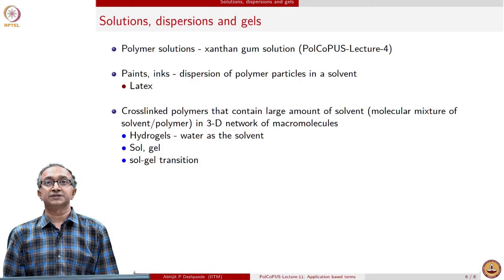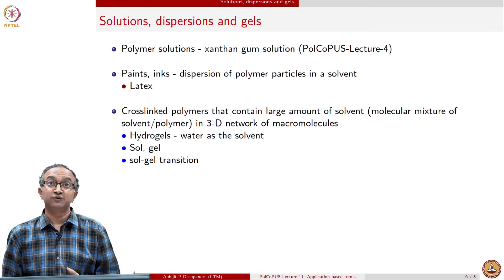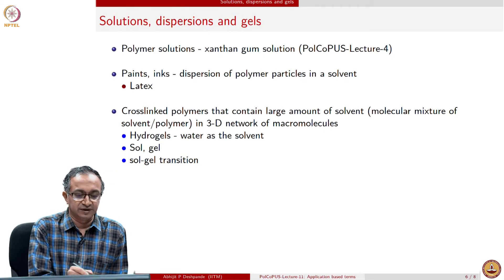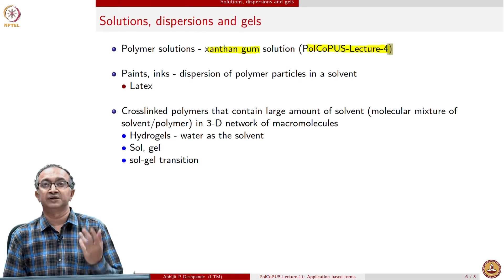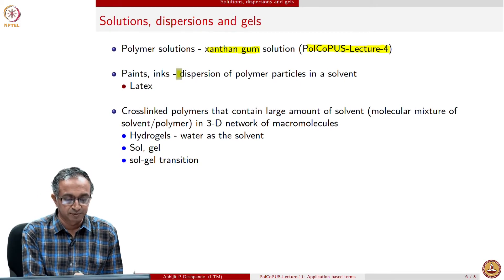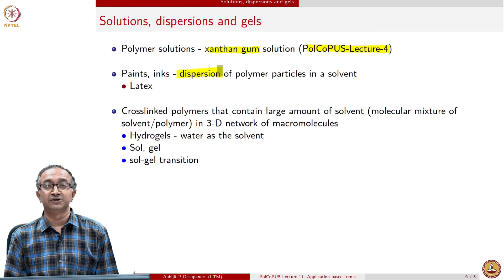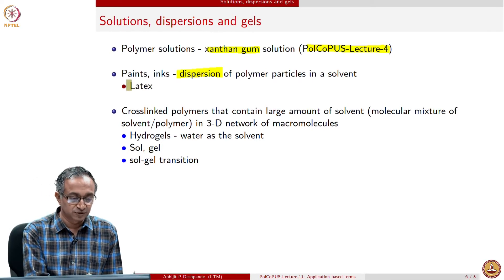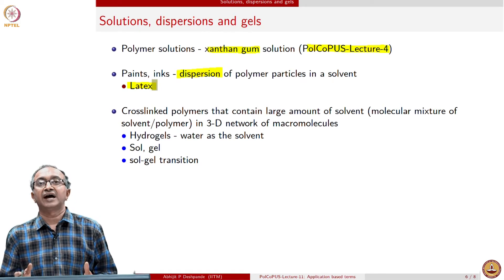Let us now look at solutions and flowing applications of polymers. When we say thermoplastics, thermosets, and rubbers, we imply solid polymer use, but polymers are also used in liquid-like forms. An example of a polymer solution is xanthan gum solution, used in petroleum recovery and food applications. An important application is polymers in dispersion form, where polymers are retained as particles in a solvent or dispersing medium. This is also referred to as latex, since the latex from a rubber tree is a dispersion of isoprene pre-polymer in an aqueous medium.